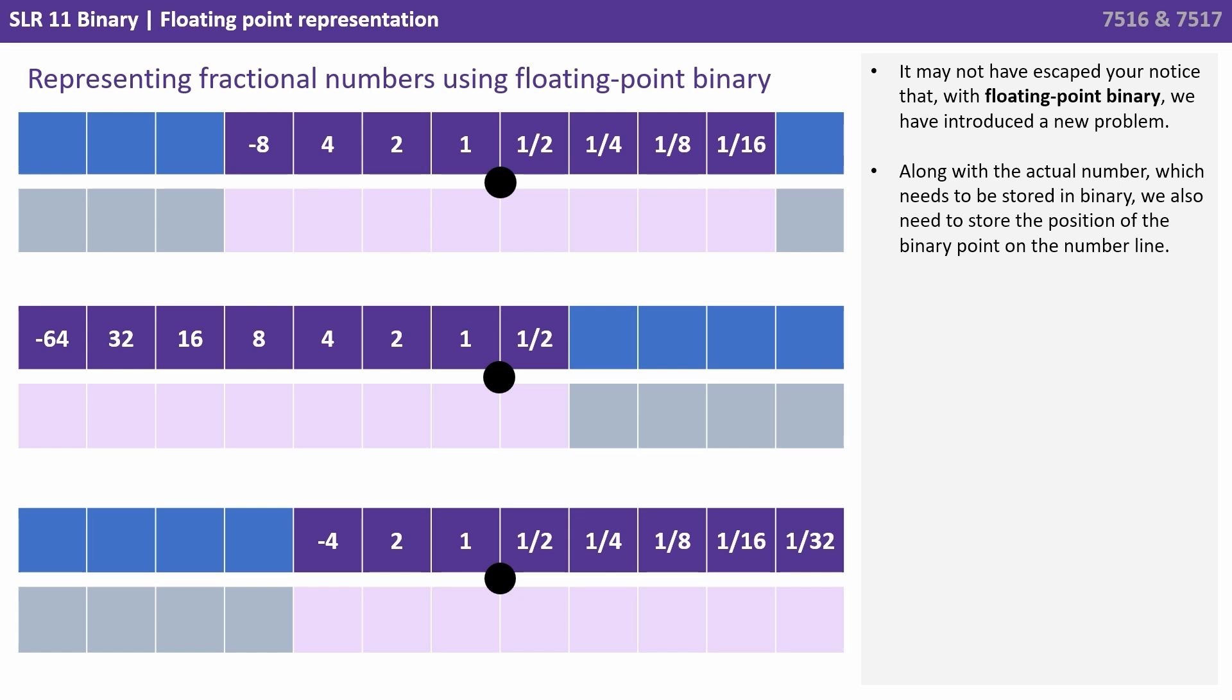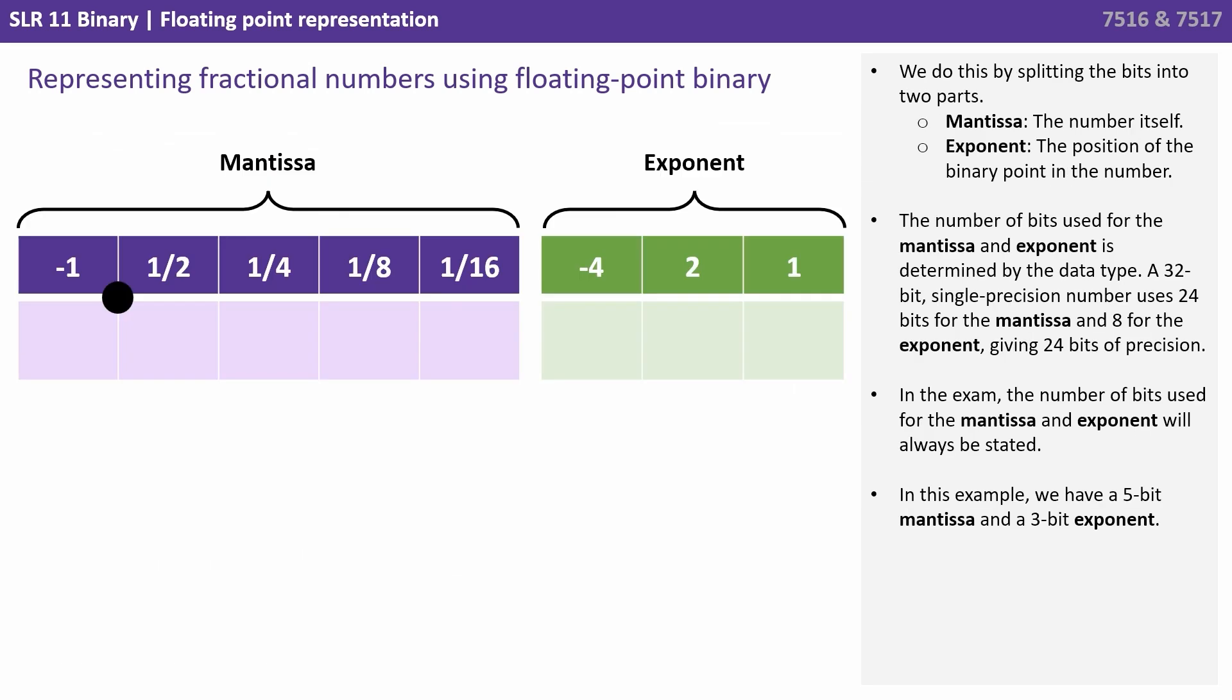Now it may not have escaped your notice that with floating point binary we have introduced a problem. Along with the actual number which needs to be stored in binary, we also need to store the position of the binary point on the number line. We do this by splitting the bits into two parts. The mantissa, that's the number or the value itself, and the exponent, the position of the binary point in the number.